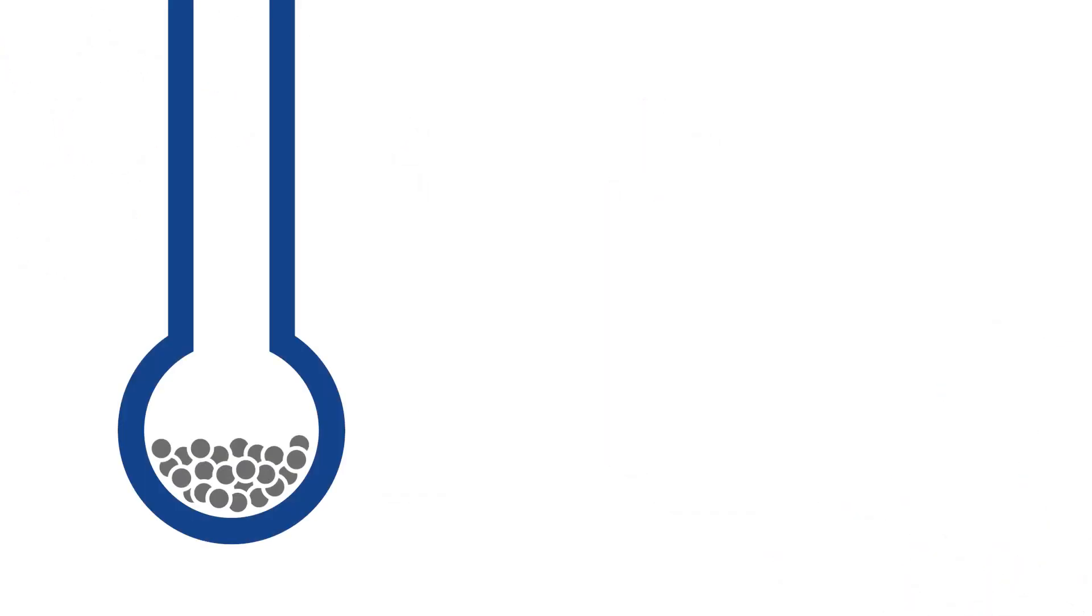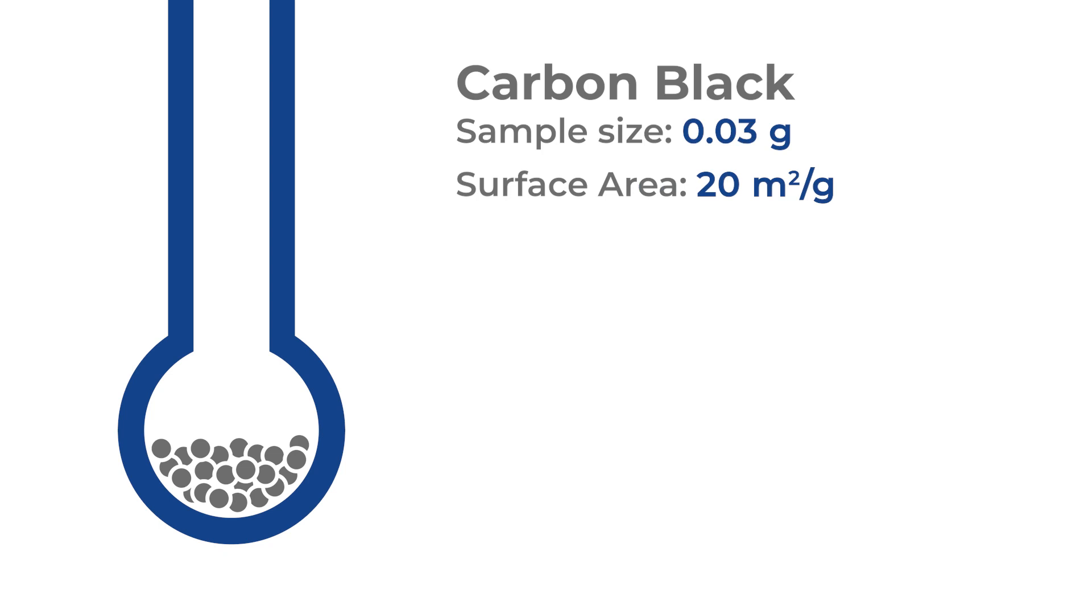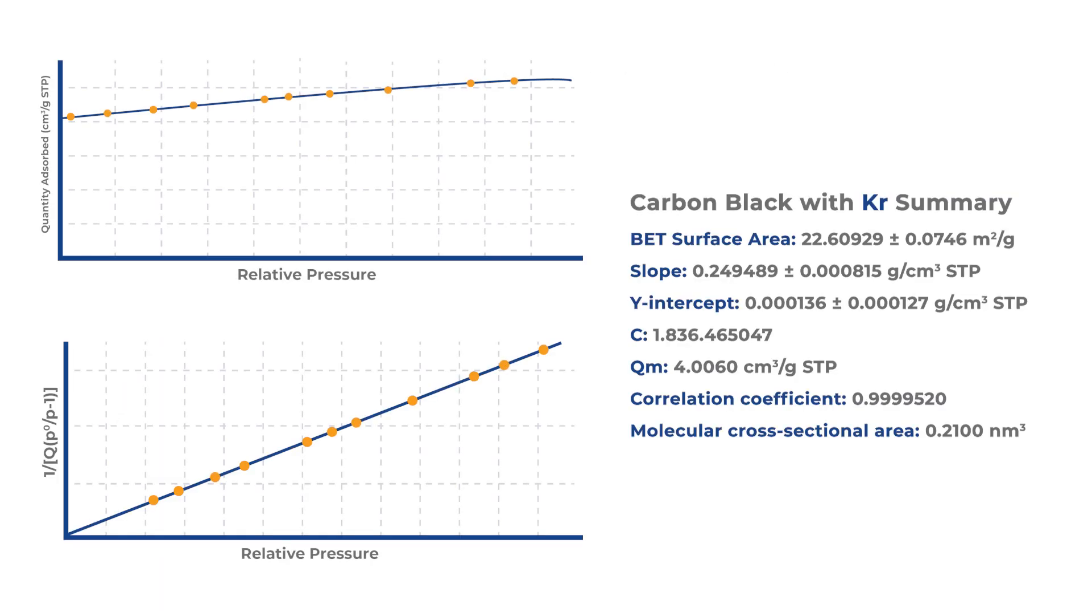If there is a limited amount of carbon black sample, such as 30 milligrams, but it has a surface area of 20 square meters per gram, then the total surface area that can be added to the sample tube would be around 0.6 square meters, which means it is no longer suitable for a typical nitrogen BET analysis. Therefore, krypton should be used as the adsorptive gas for a reliable result.